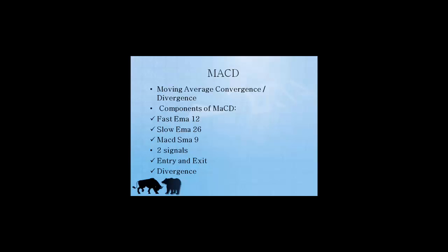MACD, which is the abbreviation for Moving Average Convergence Divergence, has three components. It has a fast EMA — which is an exponential moving average — a slow EMA of 26 periods, and it also has a smooth moving average of 9 periods.